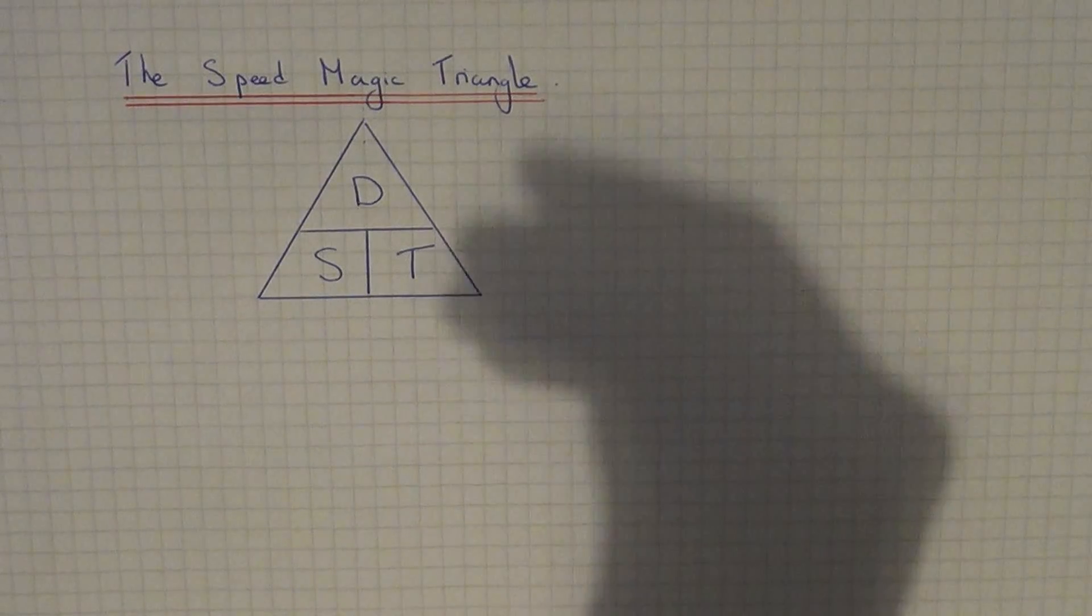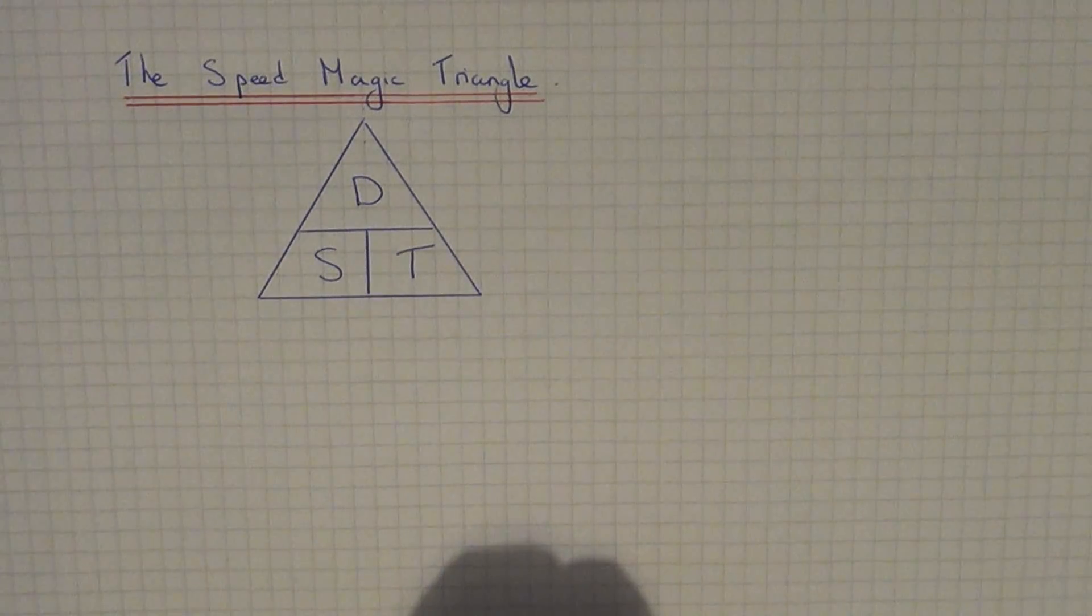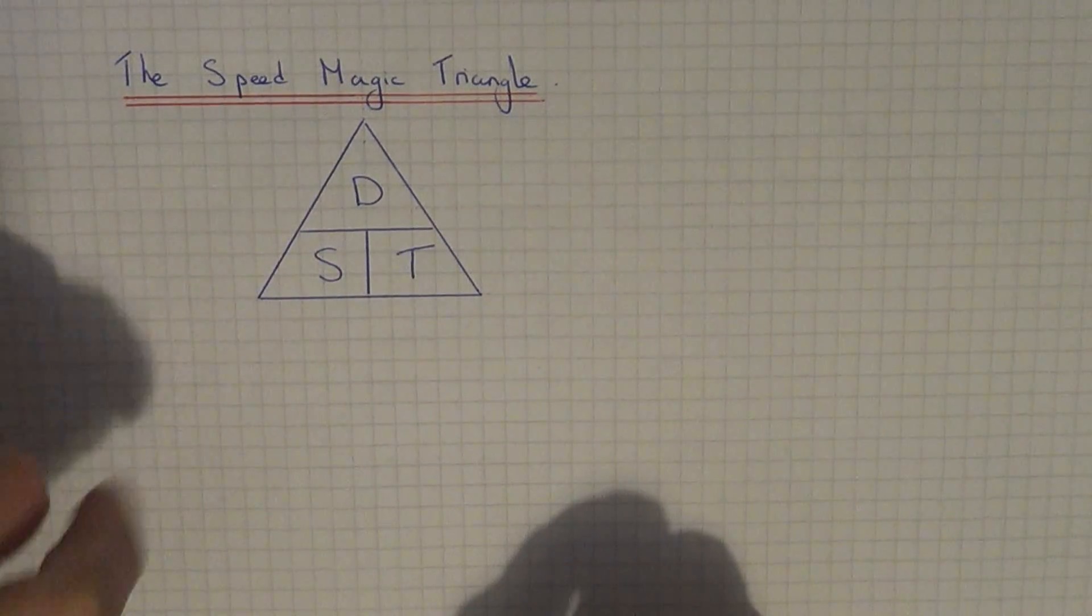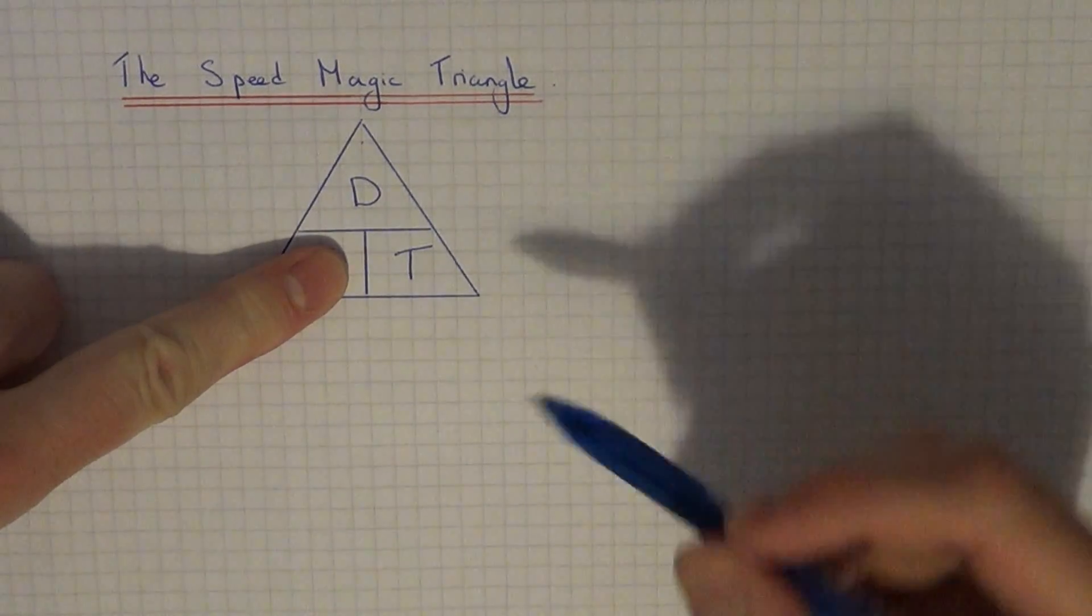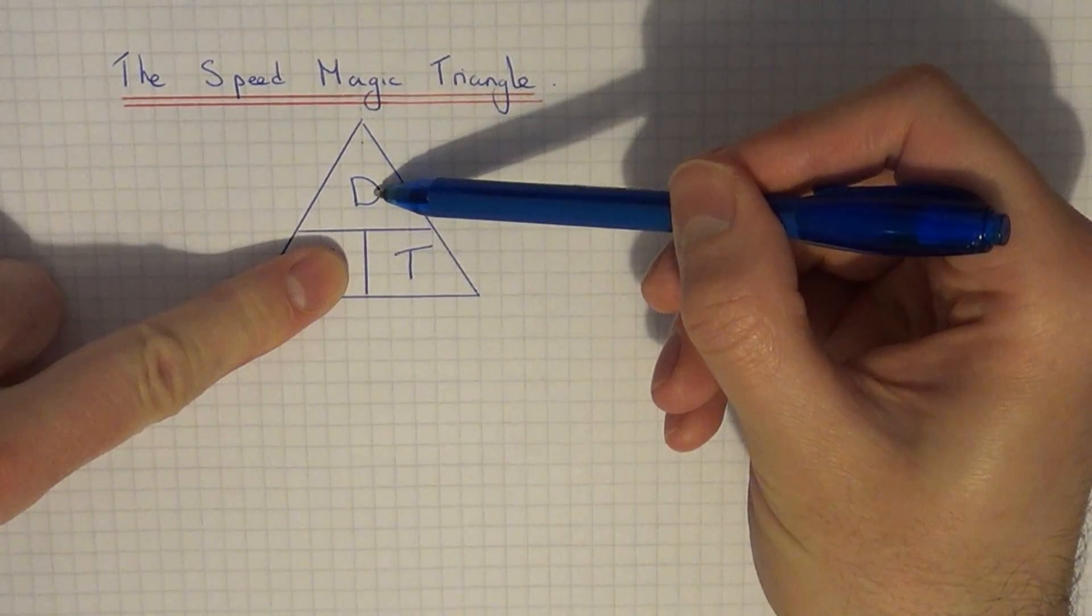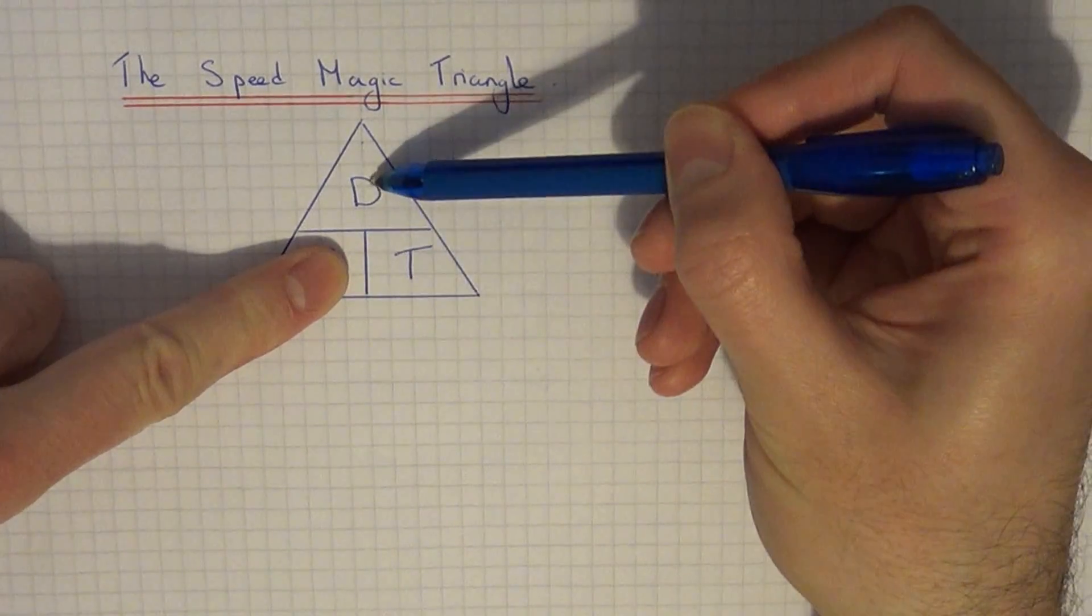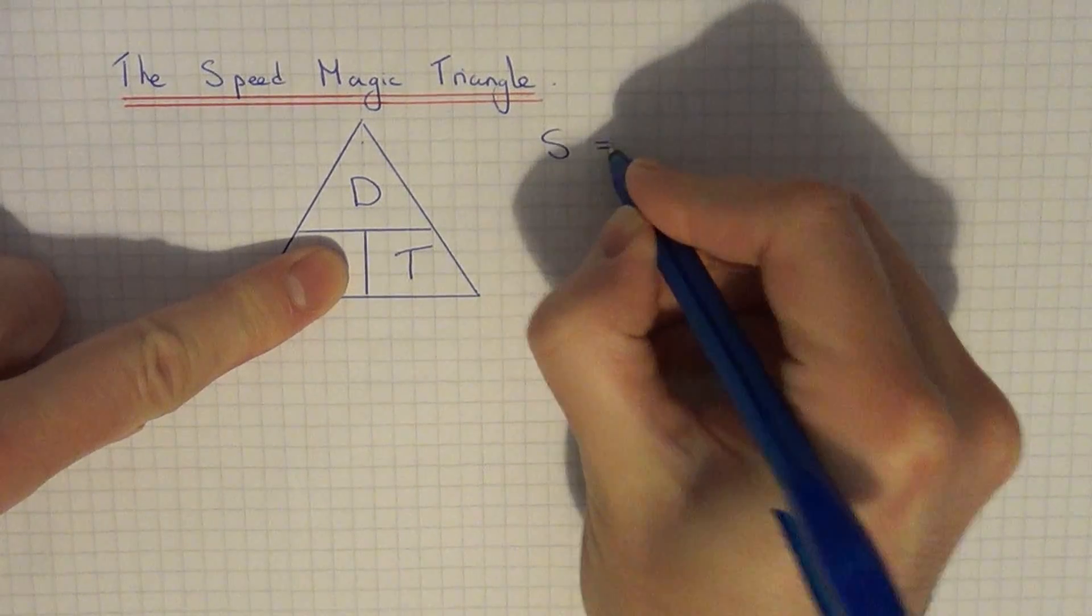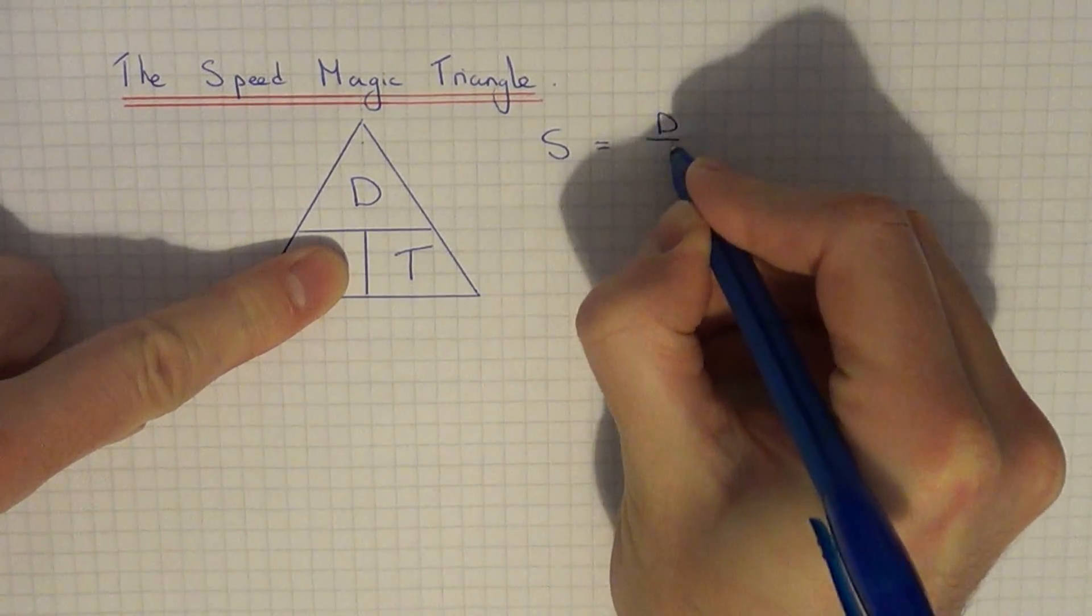So what you can do from this is write down your three formulas for speed, distance, and time. So, for example, if you wanted to work out the speed, you'd cover up the speed, and since D is on the top of the triangle and T is underneath it, it will be distance divided by time. So speed equals distance divided by time.